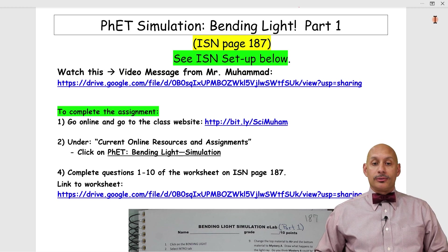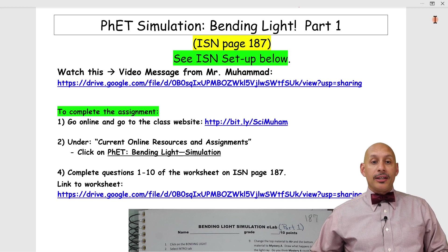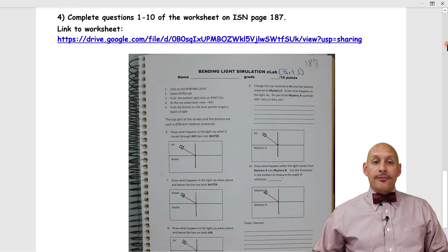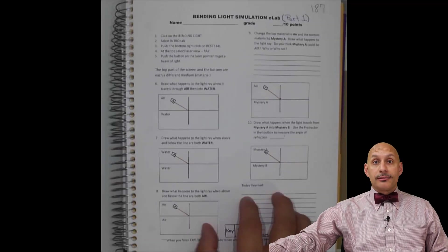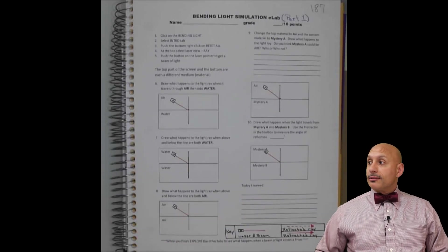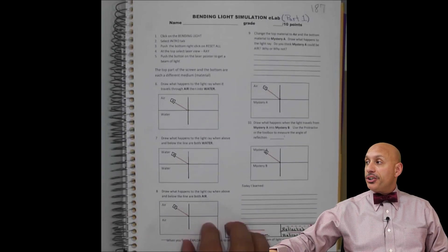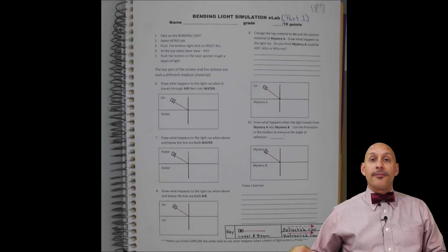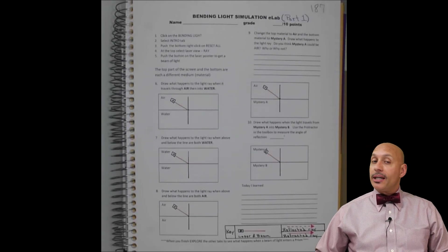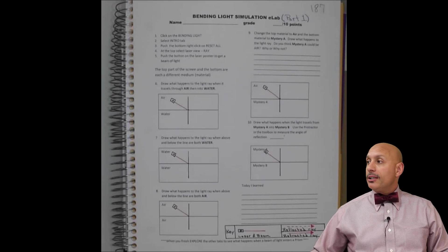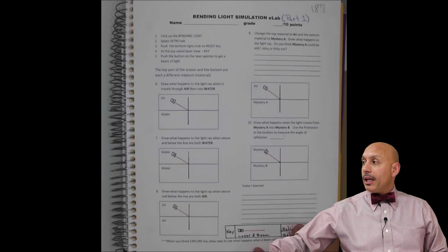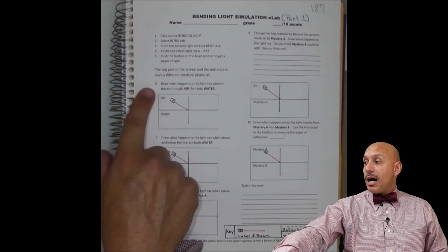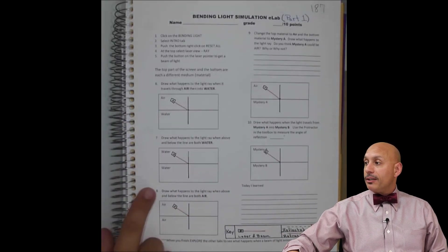If we look at the notebook setup, we have a sheet that you can print out and tape that sheet top and bottom to page 187. Now for some reason you cannot print this out, all you need to do is get a blank sheet of paper and focus on these boxes, number six, seven, eight.